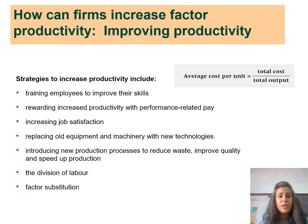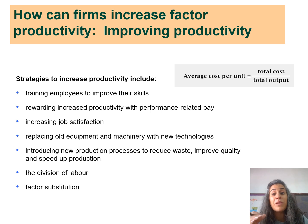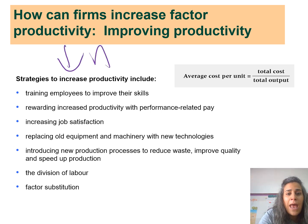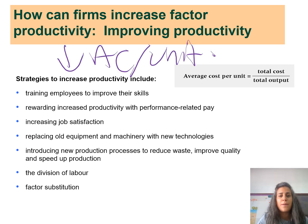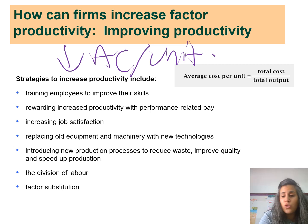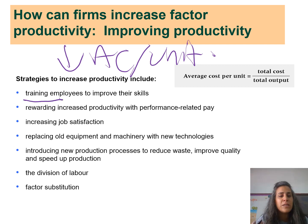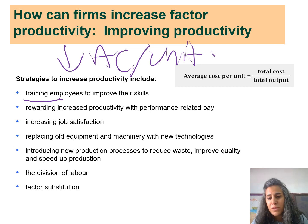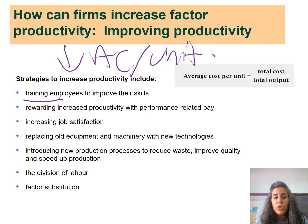How can firms improve productivity? The goal is the same amount of inputs and costs but more output — achieving a lower average cost per unit. Strategies include: first, making employees more productive by training them to improve their skills; second, rewarding increased productivity with performance-related pay — the more productive you are, the higher your salary increment.